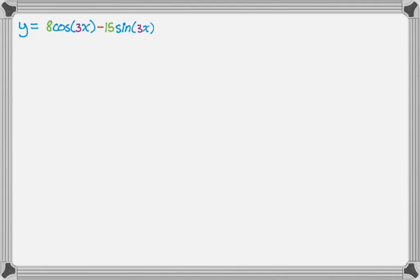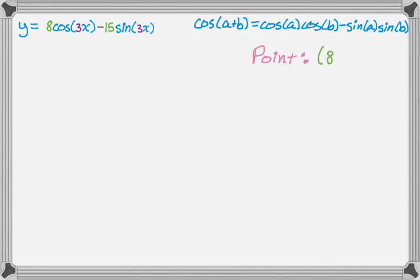So the first example: 8 cosine of 3x minus 15 sine of 3x. So there's a minus sign, so I'm going to use cosine of a plus b. So let me just jot down that formula. And I'm going to pull off the point. So the point is (8, 15). I know that 8 is the x-coordinate because it's with cosine. Cosine is the x-coordinate on the unit circle, so that's why I'm doing that.